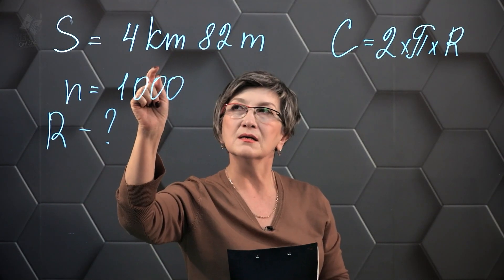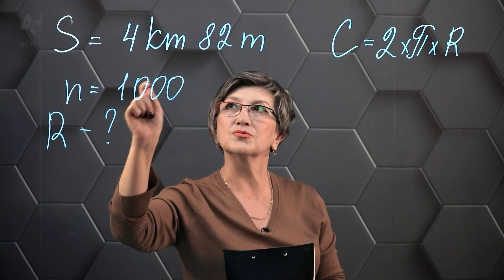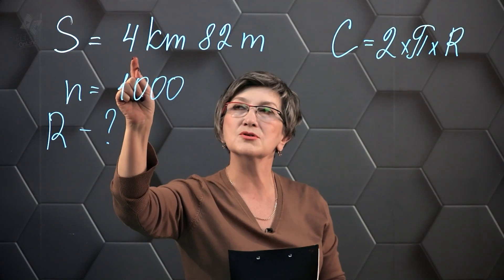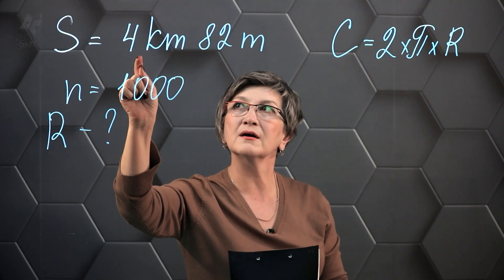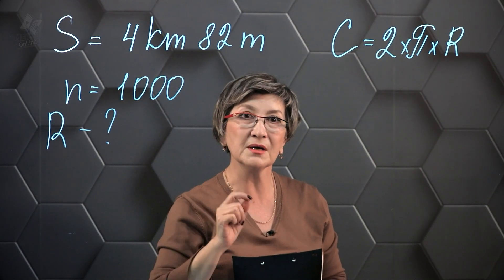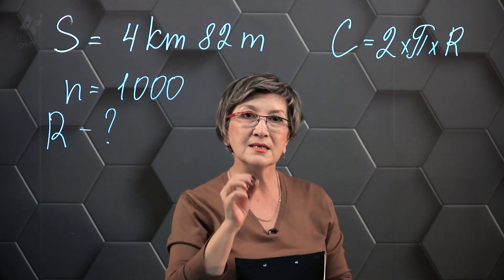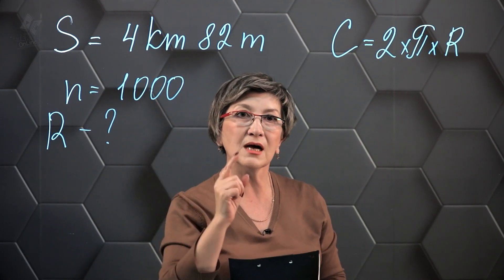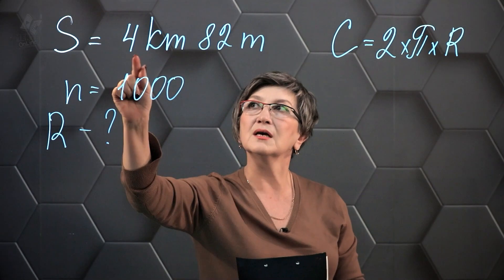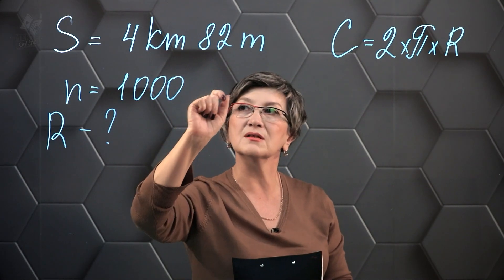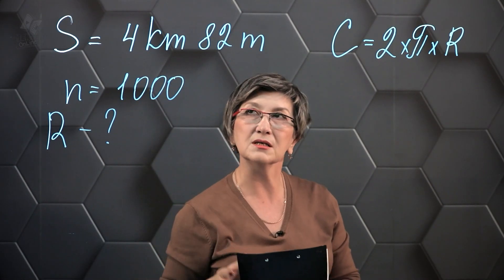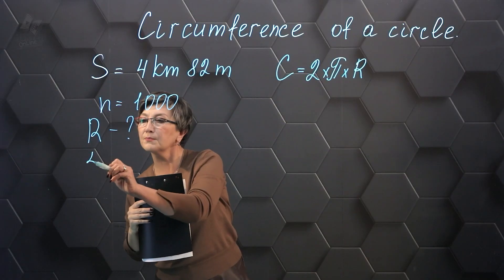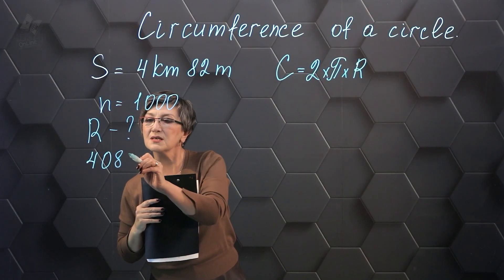If in a thousand revolutions the wheel has traveled a distance of 4 kilometers and 82 meters, we need to find how much distance the wheel traveled in one revolution. To do this I will divide 4 kilometers and 82 meters by 1000. As a result we get 4082 meters.